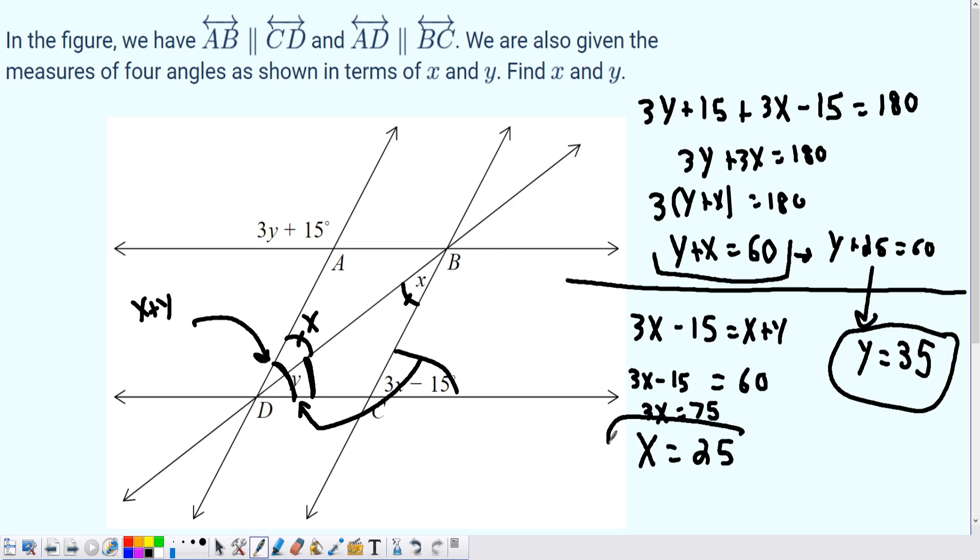Therefore, in a relatively simple matter, even though this looks like a complicated diagram, we have found a solution just knowing basic facts about parallel lines and by taking the complexity of the diagram and making it as simple as possible, imagining only two parallel lines and one transversal at a time.